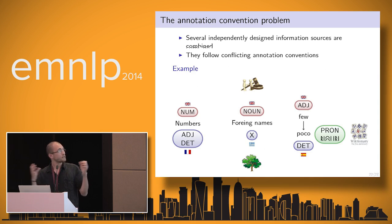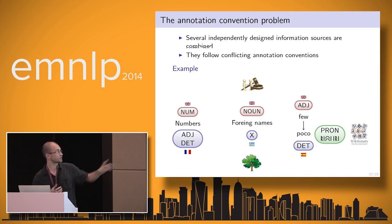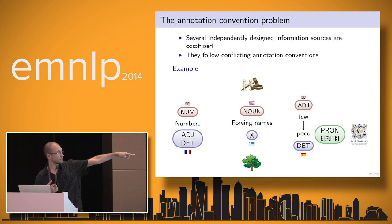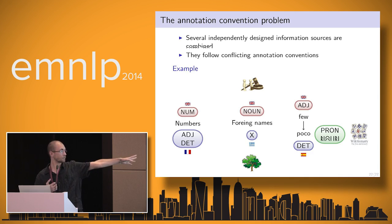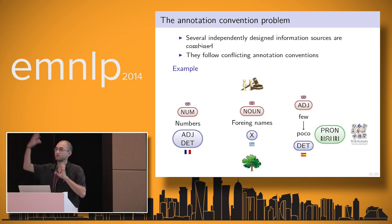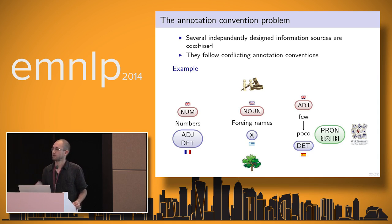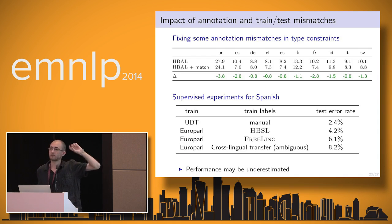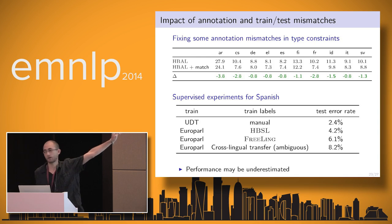We are combining different sources of information that have been designed independently, and the annotation in every source is different. For example, in English numbers are always labeled with the NUM tag, while in French they are labeled as adjective or determinant. This gives systematic biases, and we can find this kind of example for all languages. These annotation differences are all the more important because we are combining three different annotations, introducing noise beyond just dictionary noise. If we just fix in the type constraints some of these frequent annotation mismatches, we already get quite a significant improvement over our baseline.